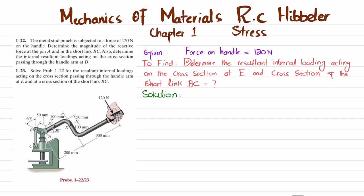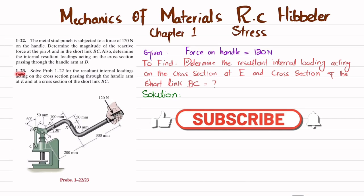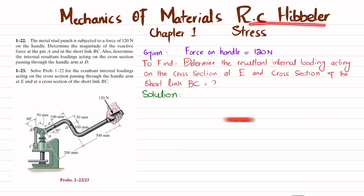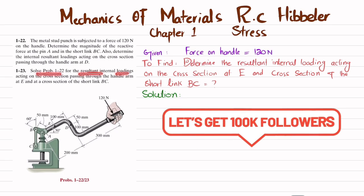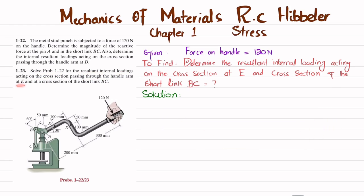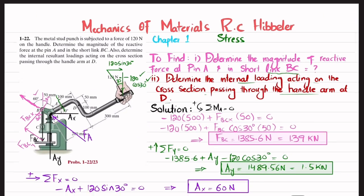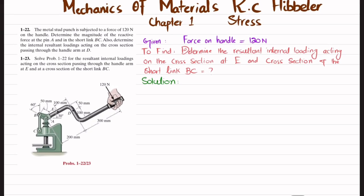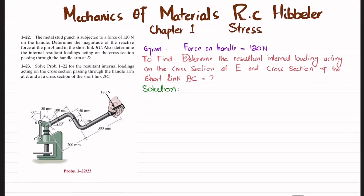Welcome back. In this video we are going to solve problem 1-23 taken from chapter 1, Stress, in the book Mechanics of Materials by R.C. Hibbeler. The problem is to solve for the resultant internal loading acting on the cross-section passing through the handle arm at E and the cross-section of short link BC. We will use the same data from problem 1-22 solved in our previous video.